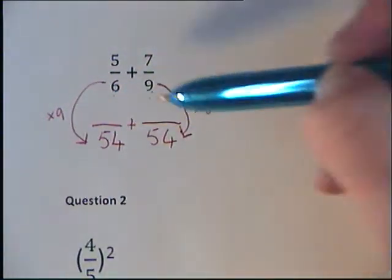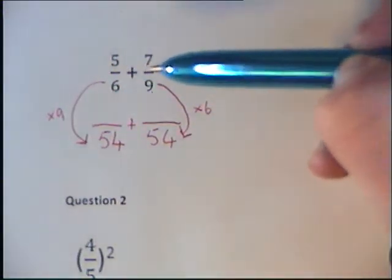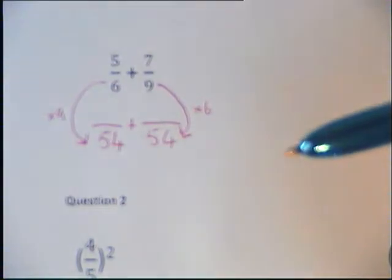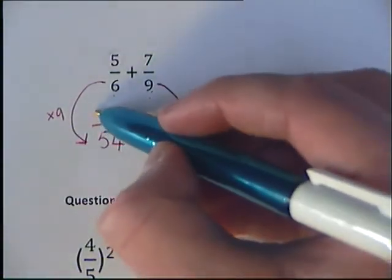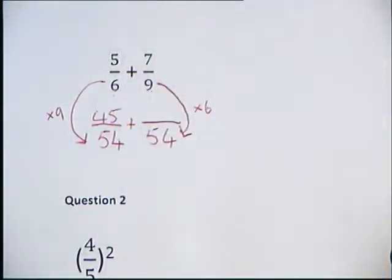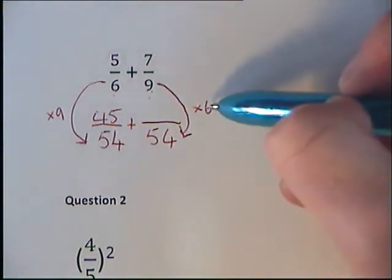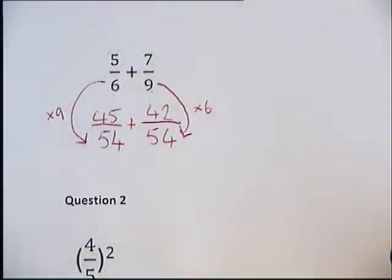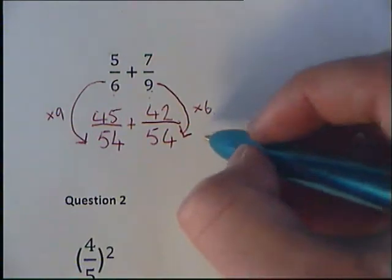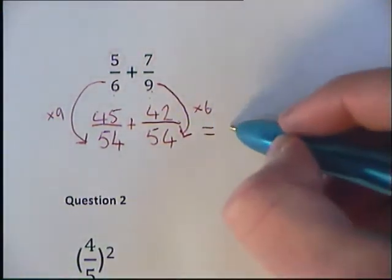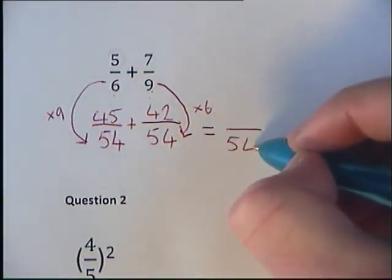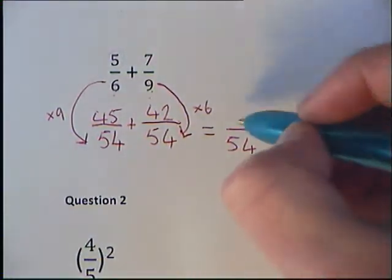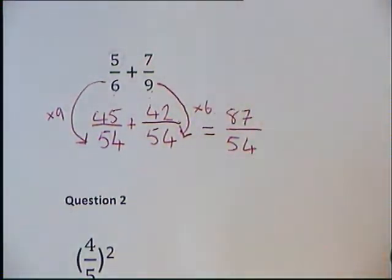Then we need to find our top numbers by doing exactly the same. So we're going to do 5 times 9 to give us 45, and then 7 times 6 to give us 42. Add those together, still have 54 on the bottom, but we're going to have 87 on the top.